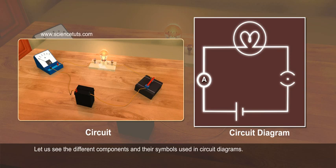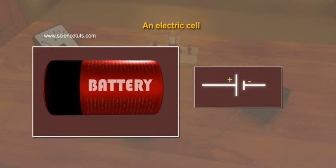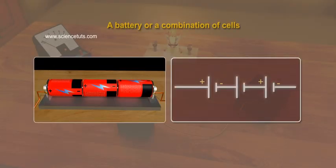Let us see the different components and their symbols used in circuit diagrams. One, an electric cell. Two, a battery or a combination of cells.